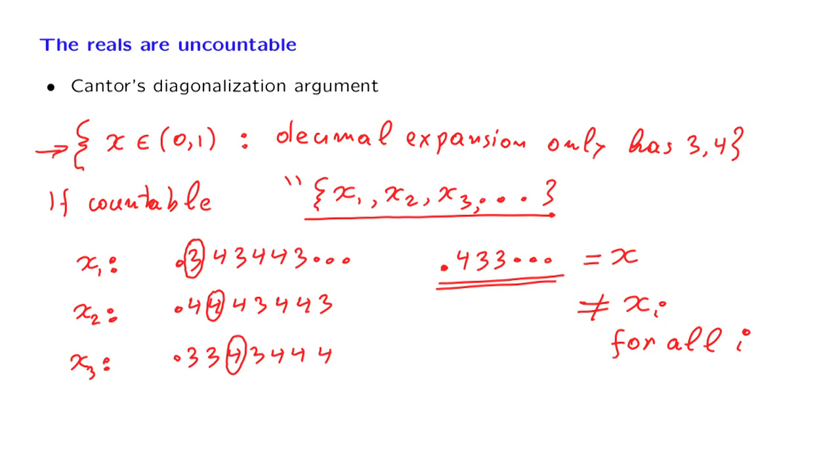And this contradiction establishes that, since this is not possible, the set that we have here is an uncountable set.